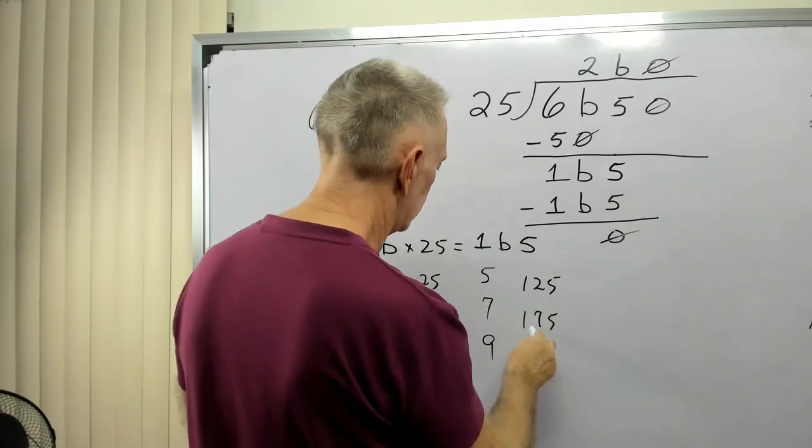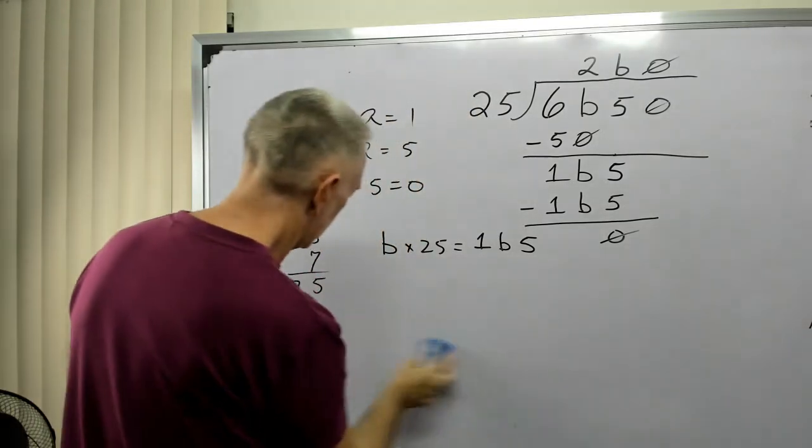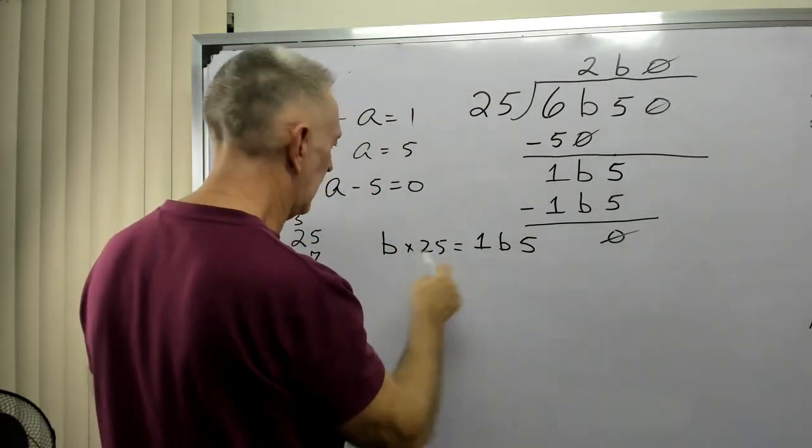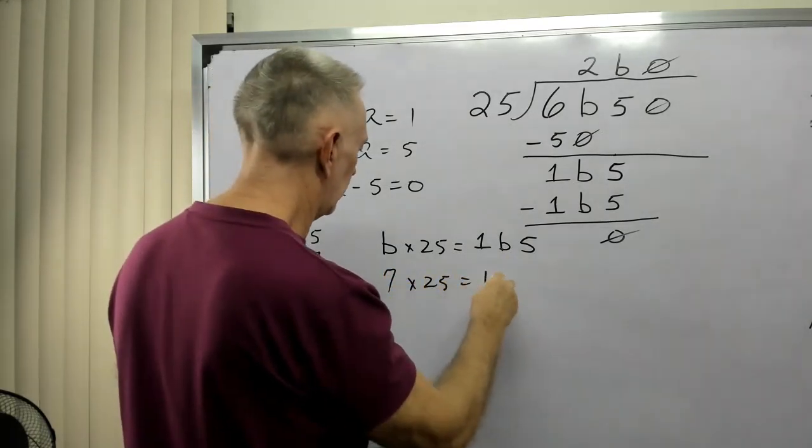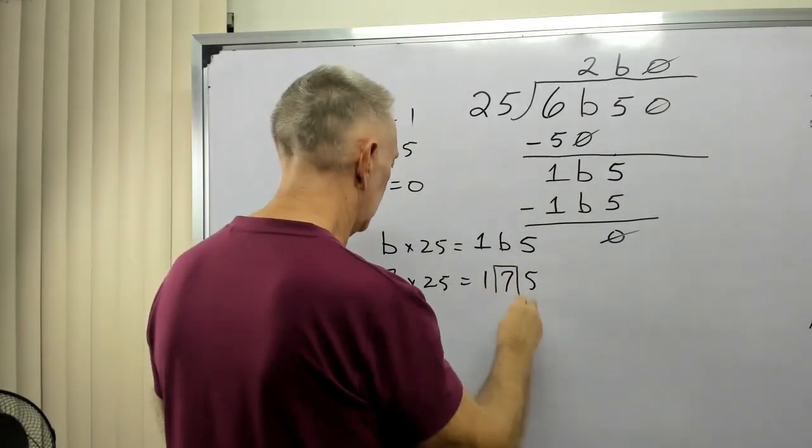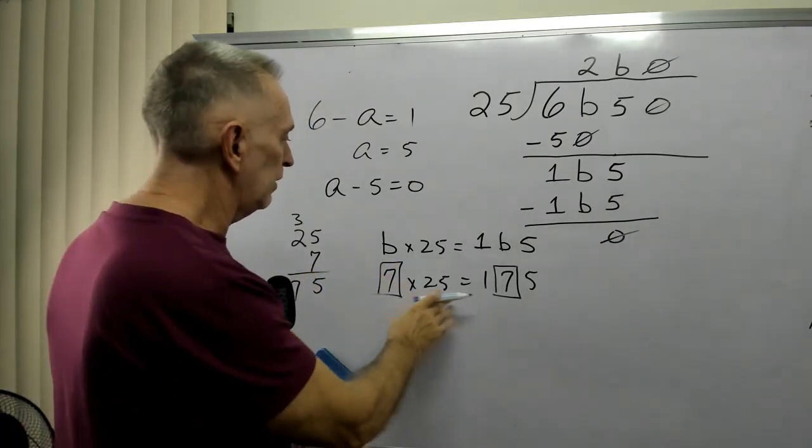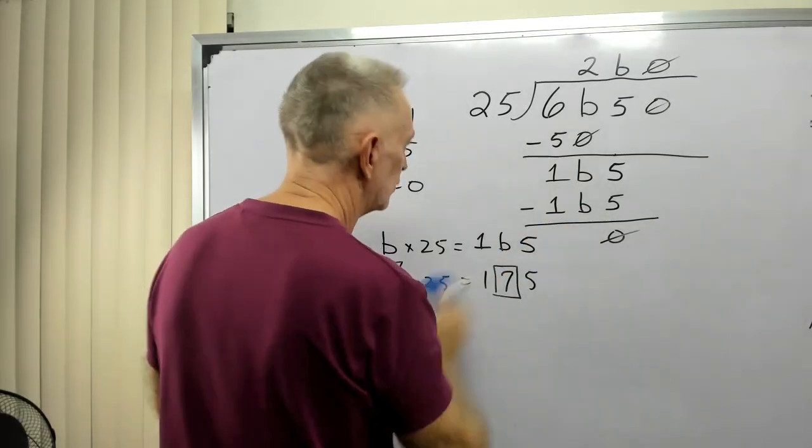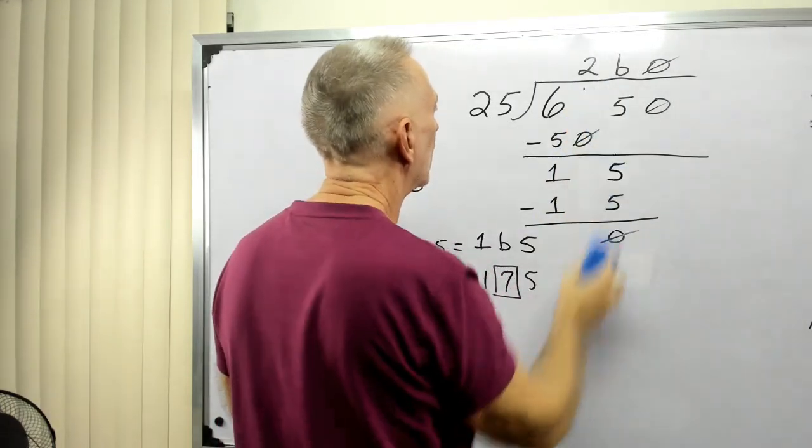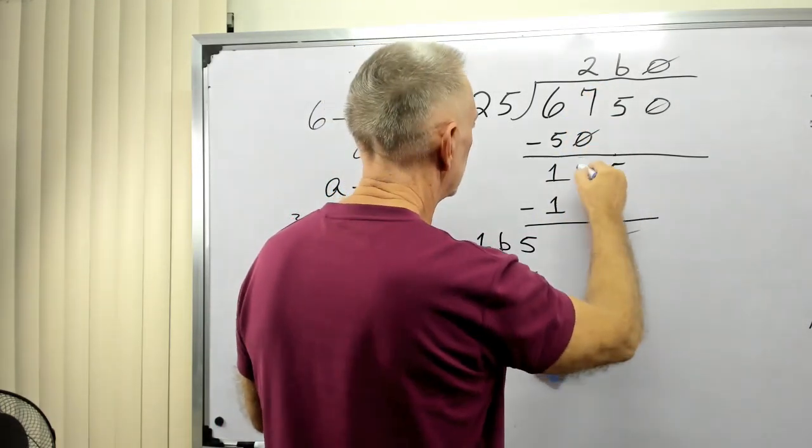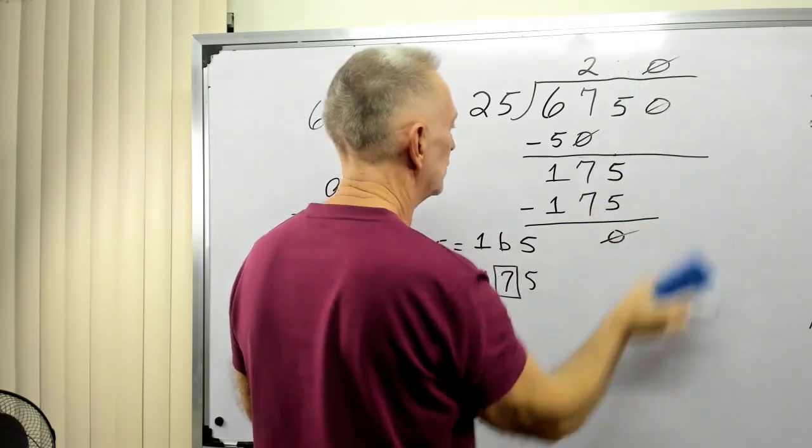Now, you'll notice this is B. Let me clean this up just a minute. B times 25 equals 1B5. 7 times 25 equals 175. That number is B, so is that number. So now we can show that B is 7.